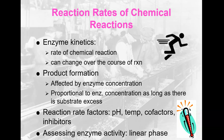Some of the reaction rate factors — things that can affect how quickly an enzyme works or how efficient it is — include the pH, the temperature, the presence of cofactors like magnesium or zinc, and the presence of inhibitors that would obviously prevent the reaction from happening.